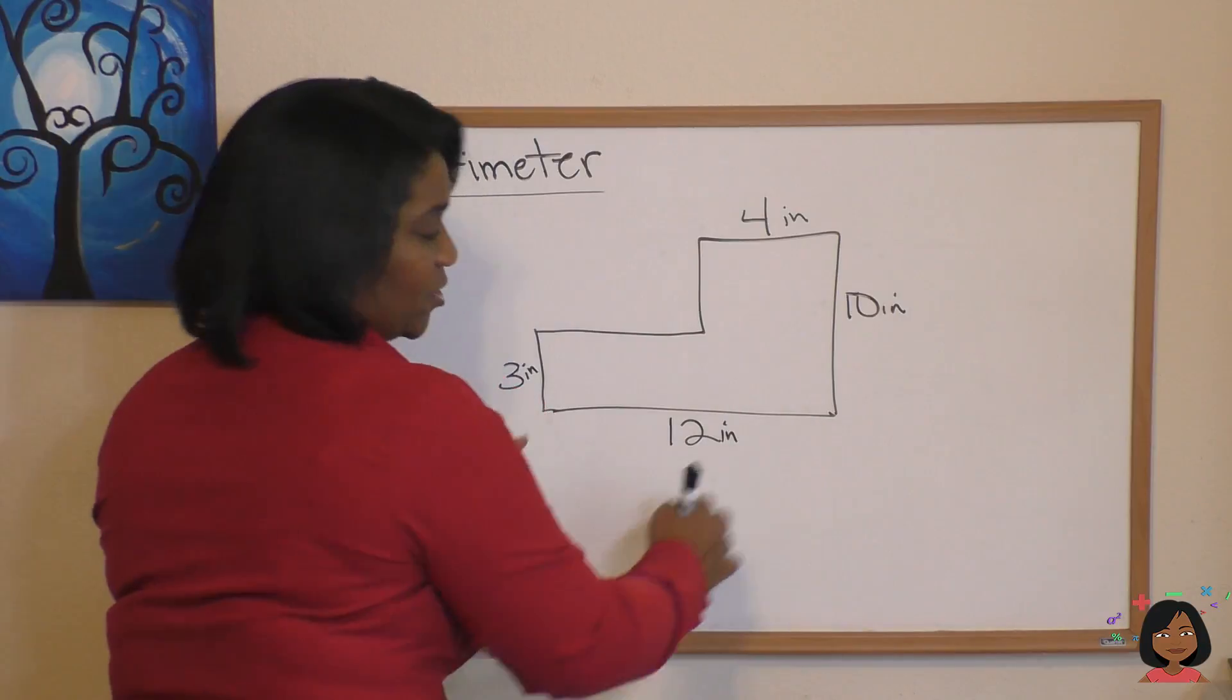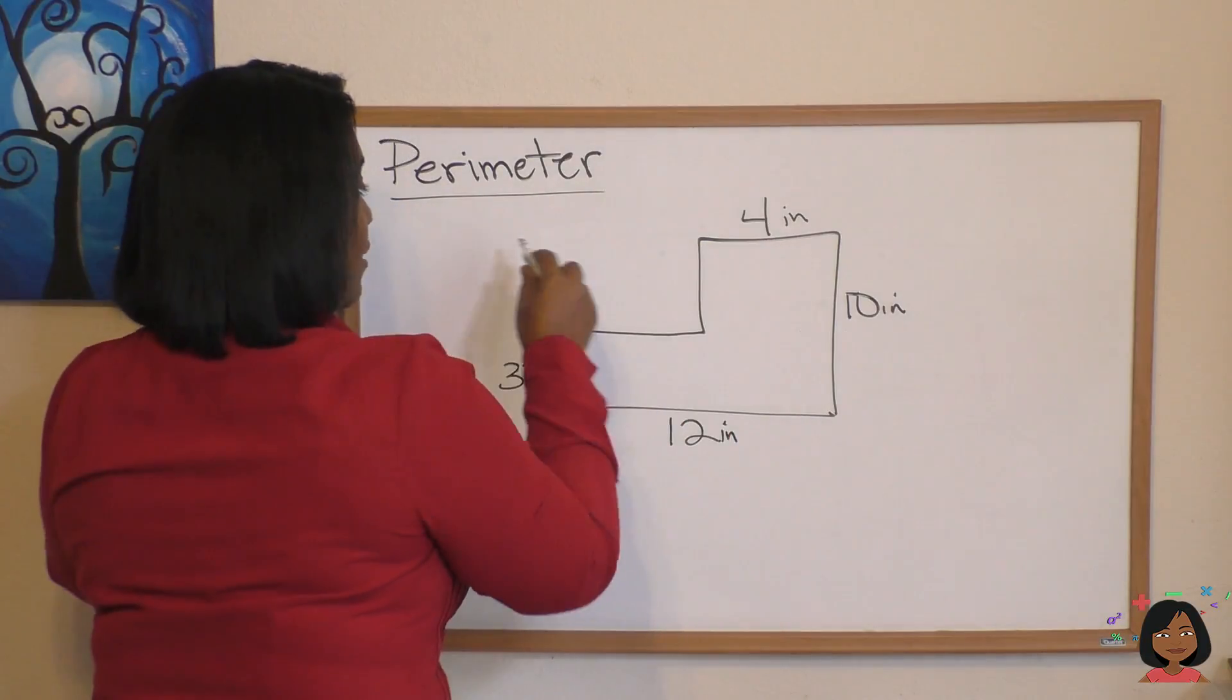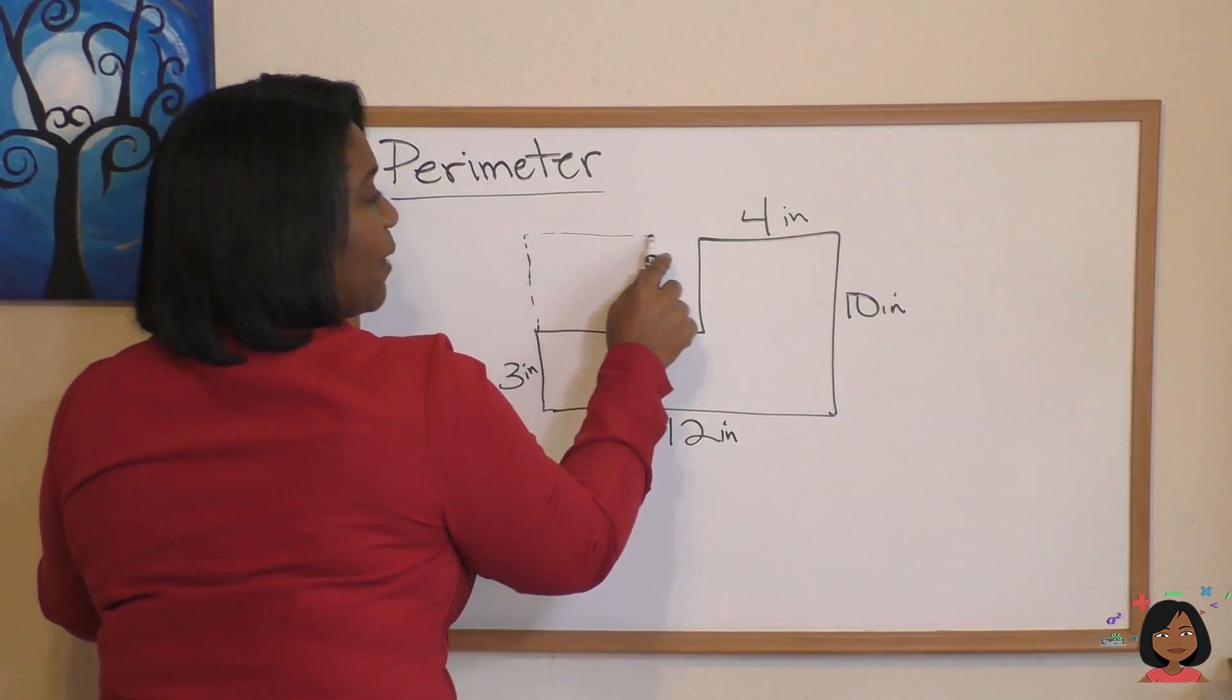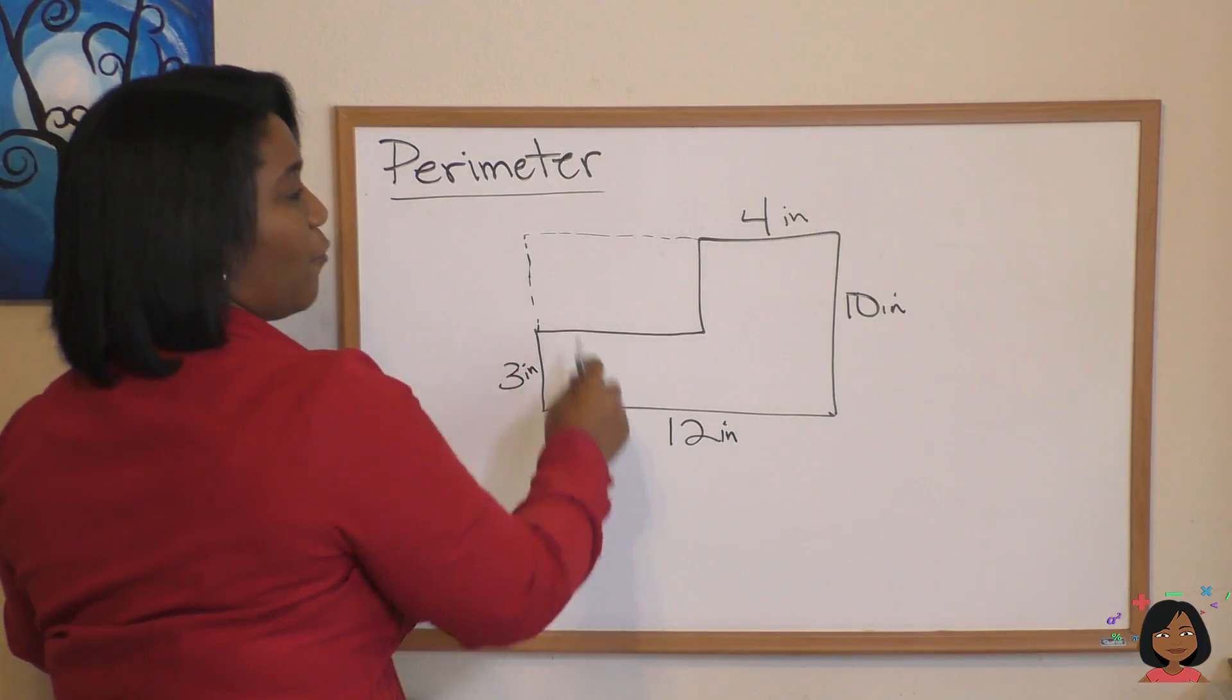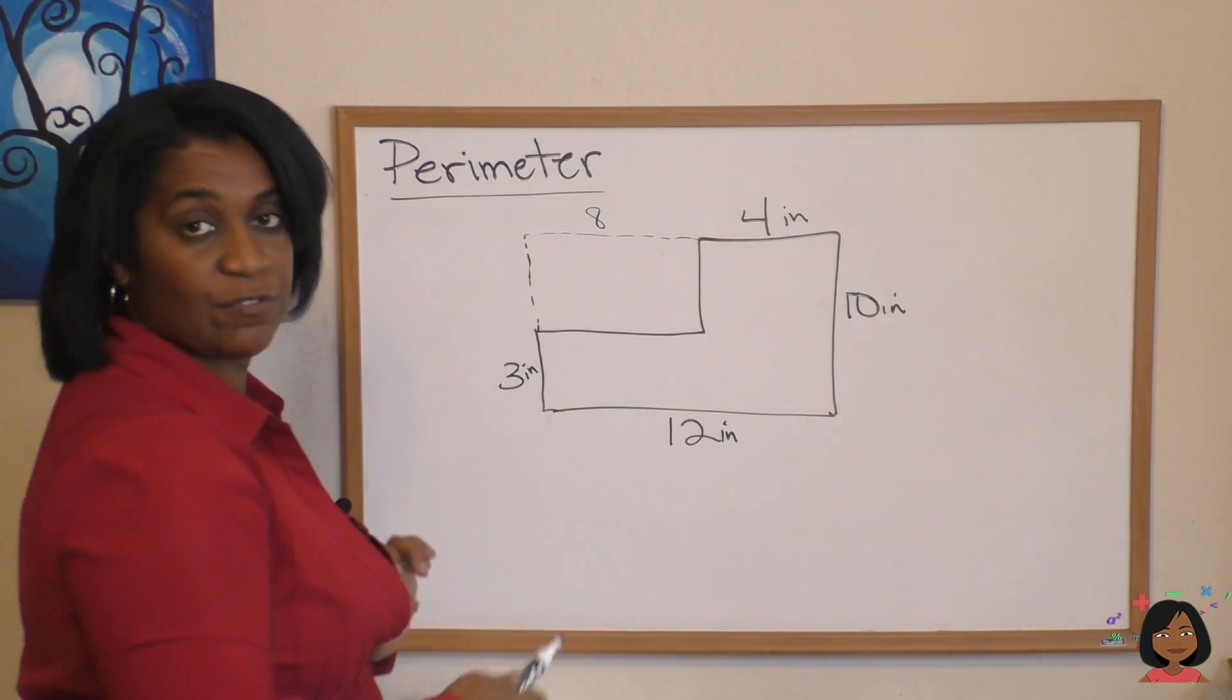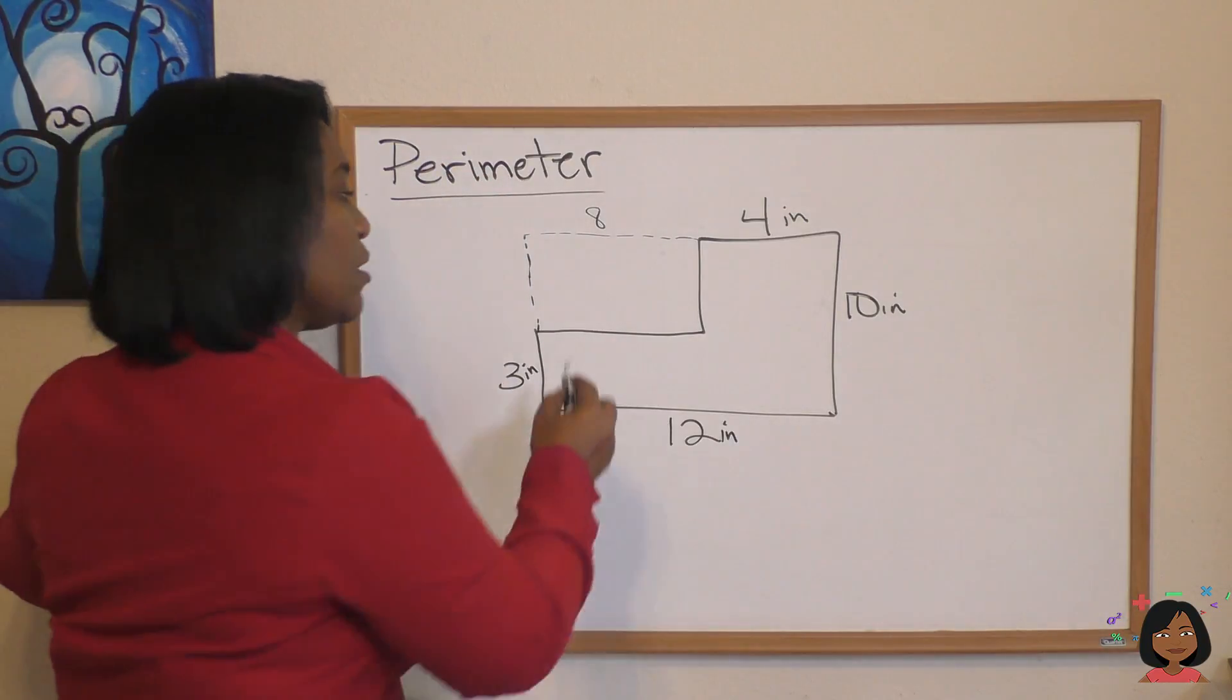Well, first of all we know this entire side is 12, which means if this piece of it is 4, since this really can form a rectangle, we know that this would naturally expand out to a rectangle. If this whole side is 12 and this side is 4, this piece here must be 8 to make the total of 12.